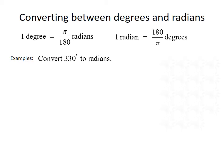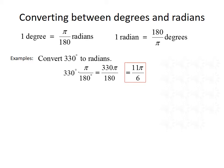Let's do a few examples. We want to convert 330 degrees into radians. We start with 330 degrees and multiply by π divided by 180. That gives us 330π divided by 180. We can cancel 30 from both numerator and denominator to reduce to 11π over 6.